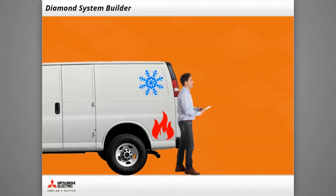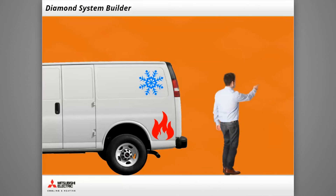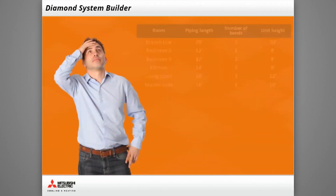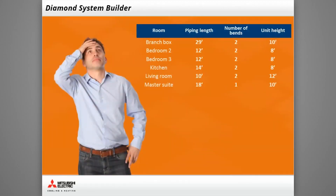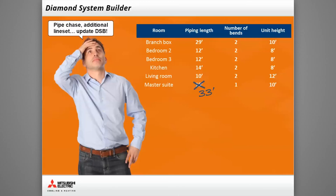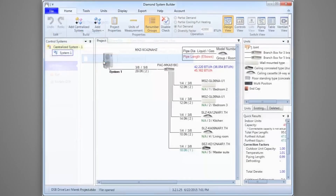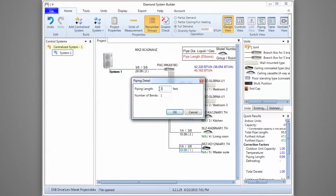Not all installations go according to plan. In some cases, changes to the design are necessary to get around unforeseen obstacles. In our scenario, we need to adjust our design to accommodate for a pipe chase — instead of 18 feet, we need to install 33 feet of line set. With any design change, return to DSB and update the project. Open the project, locate the unit line set needing to be changed, update the piping length, and click OK to confirm the change.